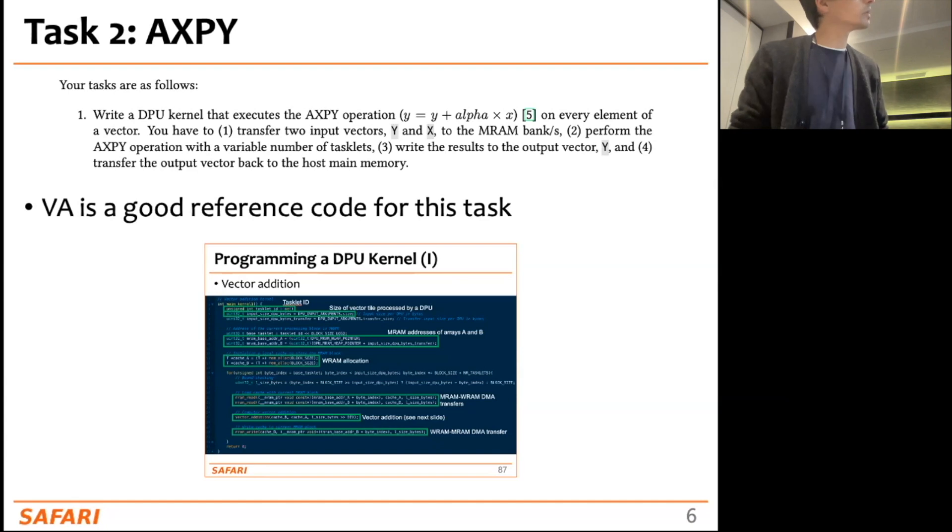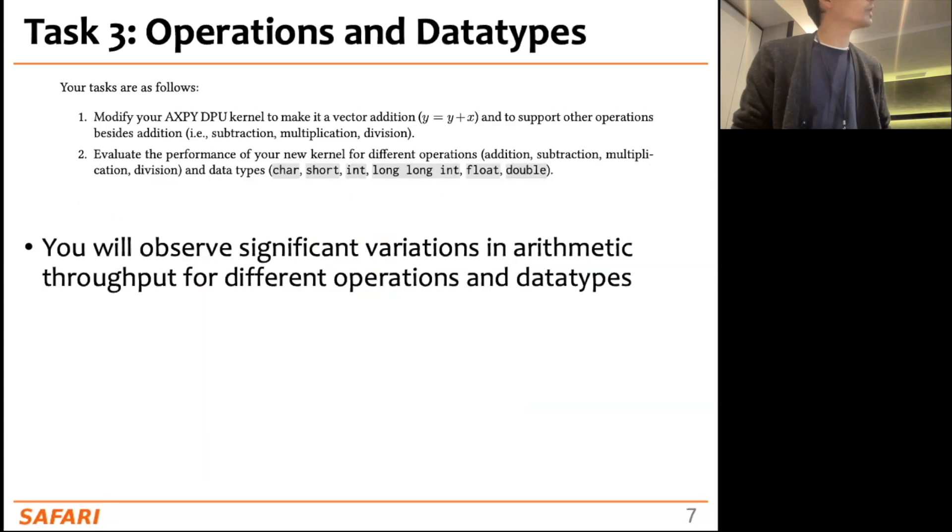And task 3 asks you to reuse the same kernel that you develop in task 2 to create a vector addition - which is an element-wise addition of two arrays. You can also do element-wise multiplication, subtraction, division, and also use different data types. We are suggesting char, short, int, long, long int, float, double.